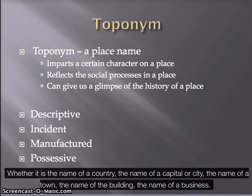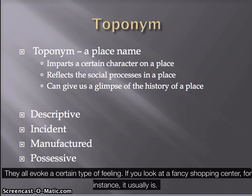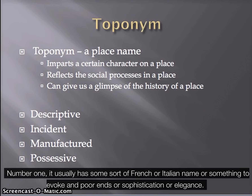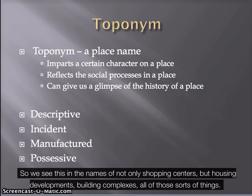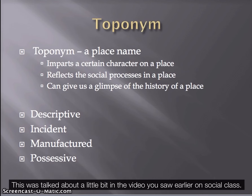Place names are extremely important — whether it's the name of a country, a capital, a city, a town, a building, or a business, they all evoke a certain feeling. If you look at a fancy shopping center, it usually isn't called 'Shopping Center Number One.' It usually has some French or Italian name to evoke importance, sophistication, or elegance. We see this in the names of housing developments and building complexes as well — this was touched on in the earlier video on social class.